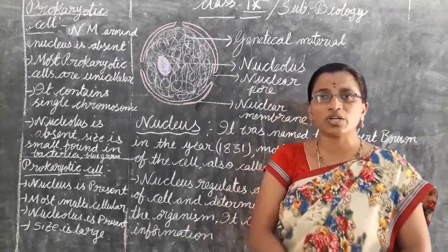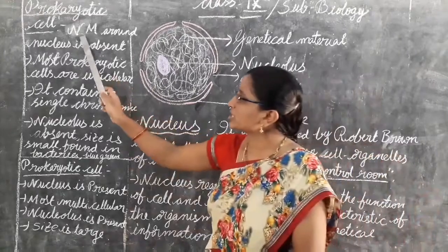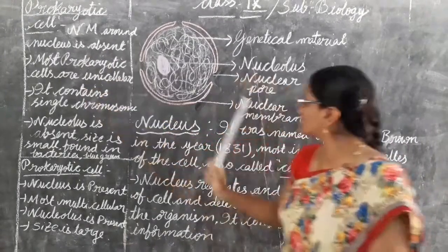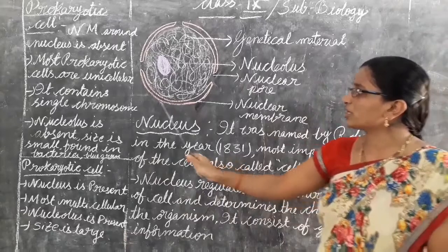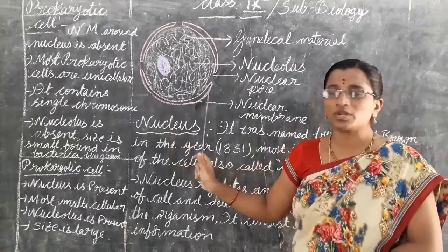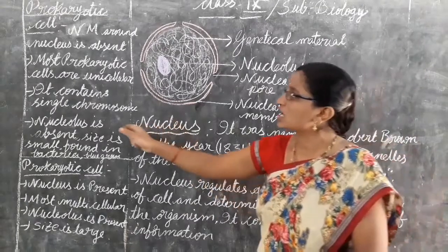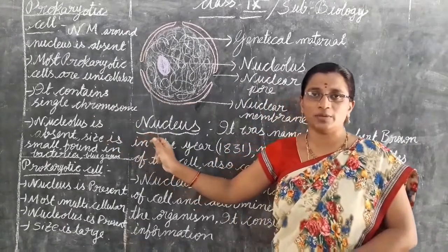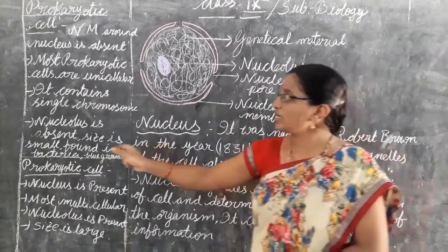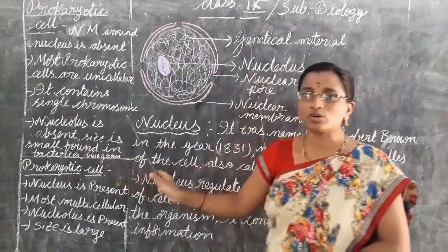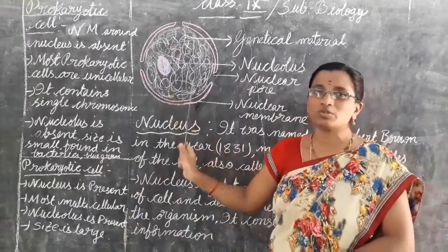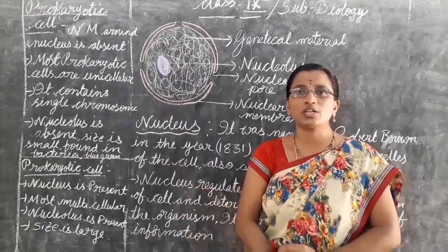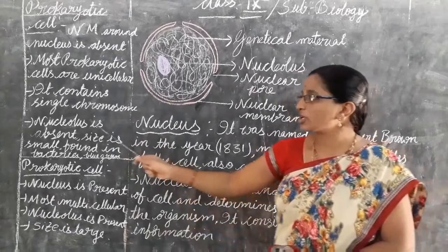In prokaryotic cells, the nuclear membrane is absent — the nucleus is absent. Most prokaryotic cells are unicellular organisms. They consist of only a single chromosome. Many chromosomes are not present in prokaryotic cells — only a single chromosome is present.